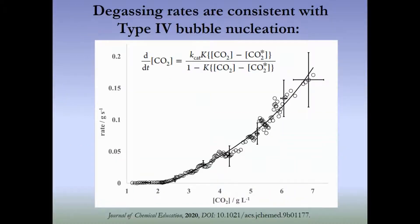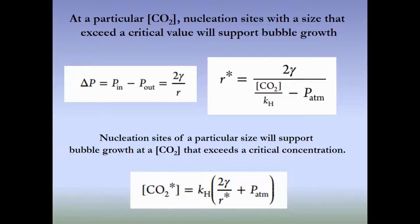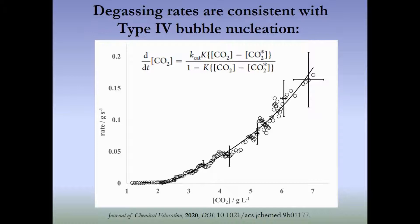We've done experiments carbonating water to different CO2 concentrations, and we find a critical CO2 concentration of about just over 2 grams per liter when we drop Mentos candies into them. From these plots with a critical concentration of, say, 2.1 g/L, we can go back to the R* equation. Knowing the surface tension, atmospheric pressure, and Henry's Law constant, we can solve for the critical pore radius on the Mentos candy, routinely achieving values between 2 and 7 micrometers.